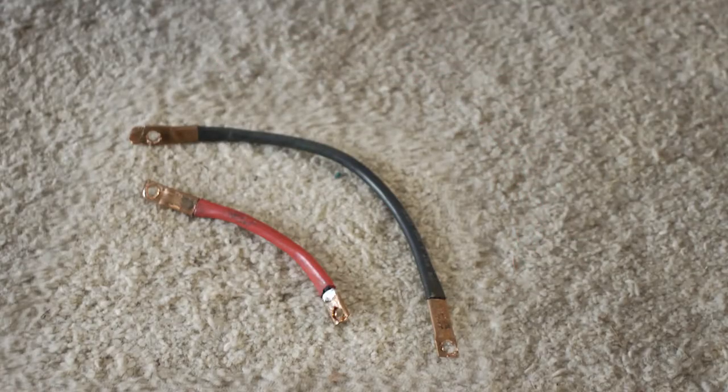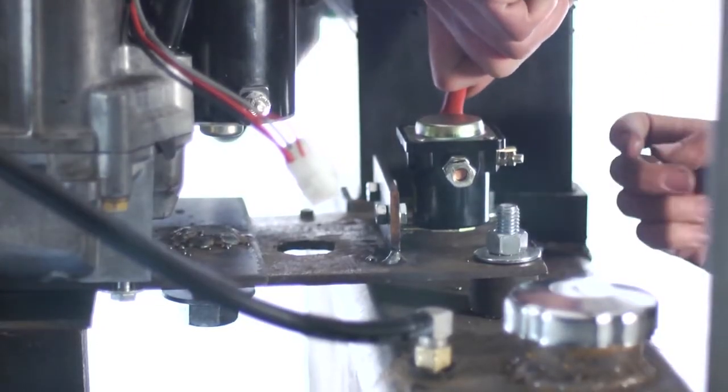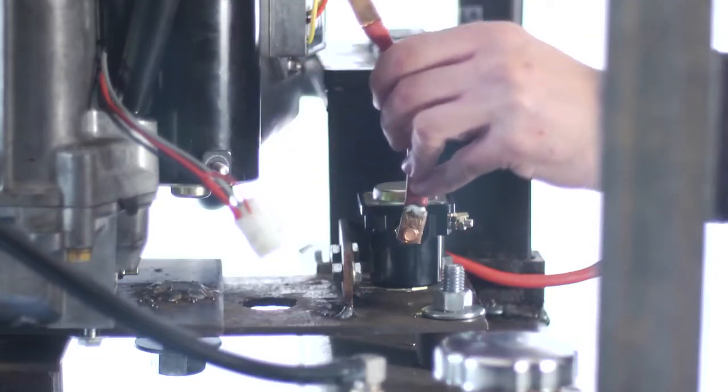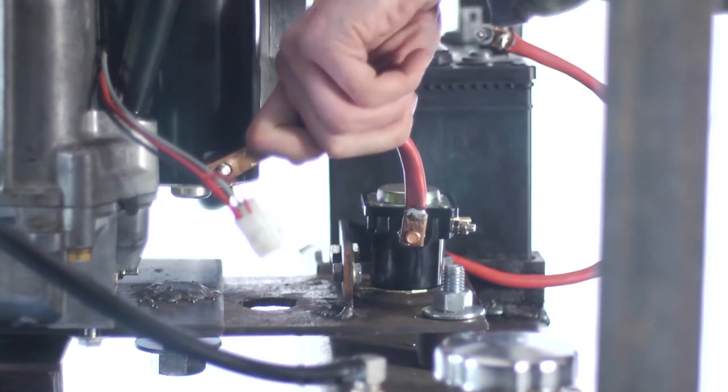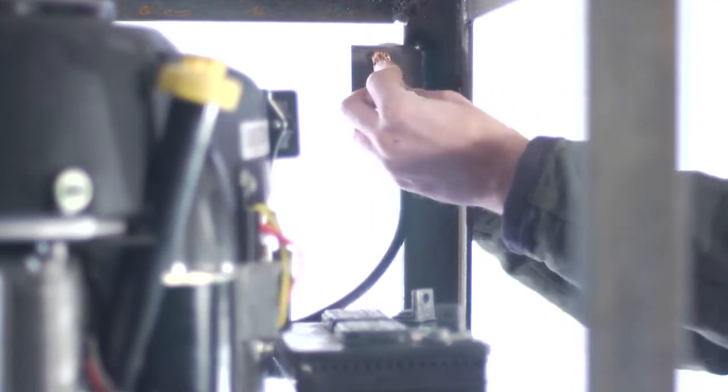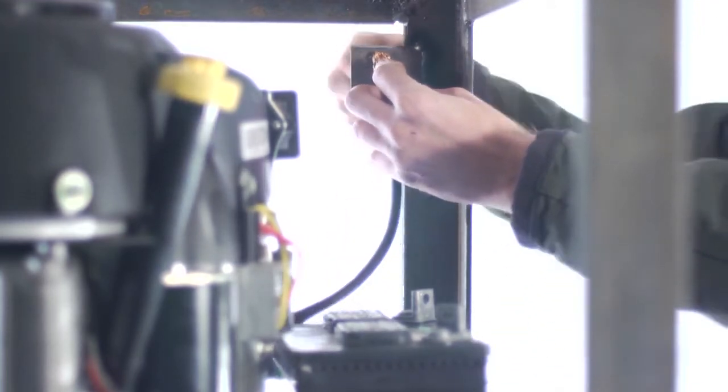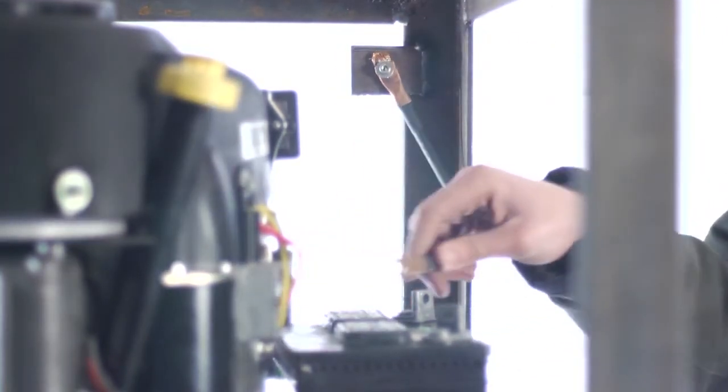Now, take the long red wire and bolt one end to the north-facing terminal on the solenoid, and the other end to the positive terminal of the battery. Next, connect the small red wire to the south-facing solenoid terminal, and the other end to the engine starter terminal. Finally, connect one end of the long black wire to the frame, and the other to the negative terminal on the battery.